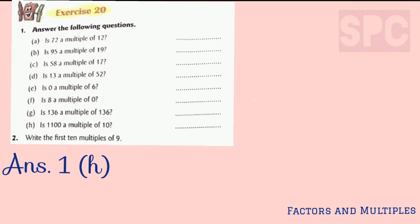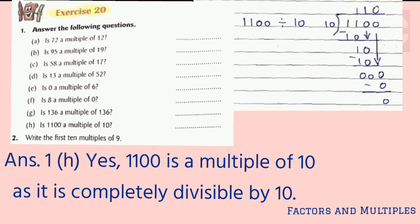Part h: is 1100 a multiple of 10? Yes, it is a multiple of 10 since it has a 0 at the end. Otherwise, you can divide 1100 by 10 — since we get 0 in the remainder, it means 1100 is a multiple of 10. We write yes.